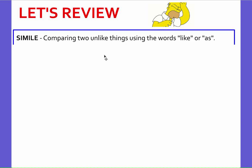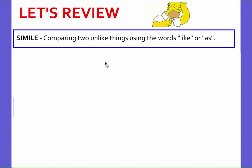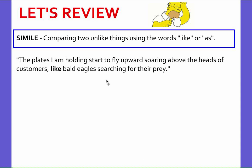Let's review. Remember we learned earlier in the year what a simile was. A simile is when you compare two unlike things using the words 'like' or 'as.' For example: the plates I'm holding start to fly upward, soaring above the heads of customers like bald eagles searching for their prey. The plates aren't actually flying upward like bald eagles, but I'm comparing the two and using the word 'like' to compare them.